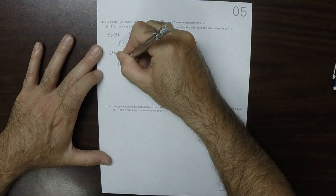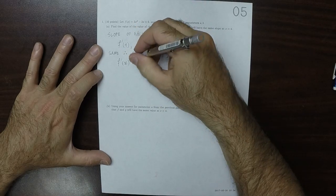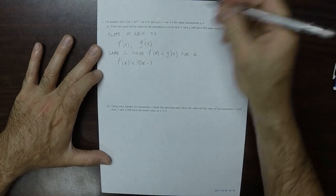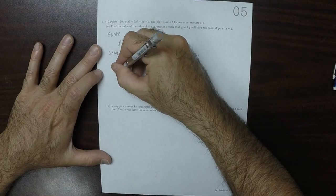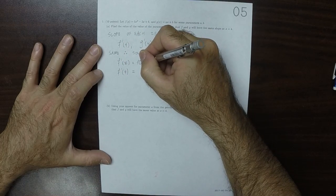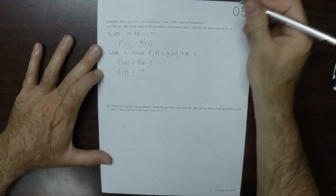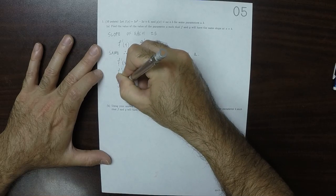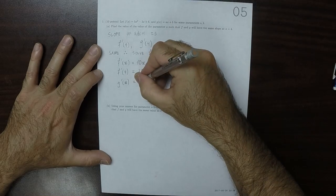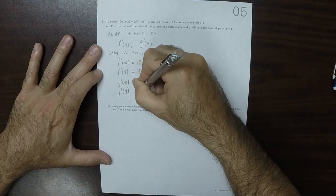The derivative of f evaluated at x is 10x minus 3. And then plugging in 4, that would be 10 times 4 is 40, and then minus 3 is 37. And the derivative of g evaluated at x is just a, and therefore the derivative of g evaluated at 4 is also a.